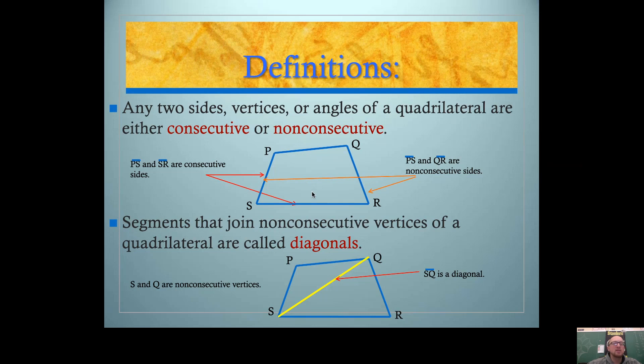In your assignment, they're going to ask you to name the parts of a quadrilateral, like the sides or the vertices or the angles. And what they're going to do is they're going to say name some parts that are consecutive or non-consecutive. Consecutive just means they're next to each other. So name two angles that are next to each other or name two sides that are next to each other. Non-consecutive is obviously not next to.